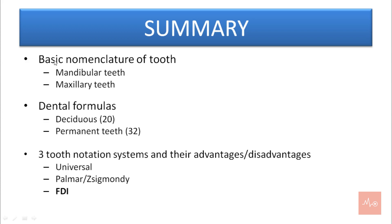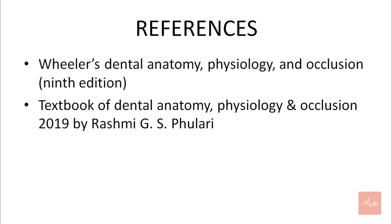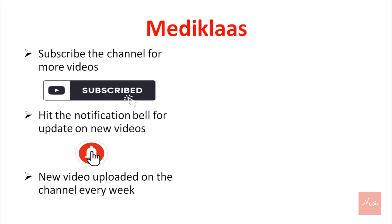To summarize what we learned in this video: first we learned the basic nomenclature of the tooth — the maxillary and the mandibular teeth. Then we learned the dental formulas for the deciduous and the permanent teeth. Then we went through the three notation systems and their advantages and disadvantages: Universal, Palmer-Zsygmondy and FDI. The FDI is highlighted as the universally accepted system. We also have a PDF with MCQs related to this topic in the description section. Thanks for watching, please subscribe to the channel and hit the notification bell for updates. See you in the next video — till then stay healthy and have an amazing week!